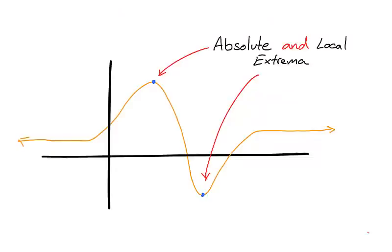Absolute extrema are, by definition, local extrema. If a value is higher than all other values, it will certainly be higher than the values near it. Conversely, if a value is lower than all other values, it certainly will be lower than the values near it.